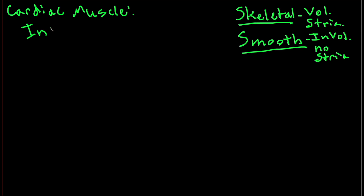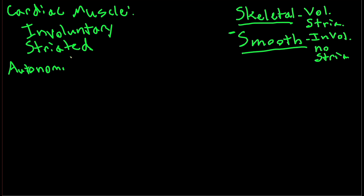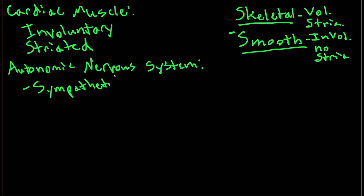Cardiac muscle is involuntary — you can't directly control your heart rate — but it is striated, so it's a good middle point and an interesting intermediate between skeletal and smooth muscle. It's also controlled by the autonomic nervous system, just like smooth muscle, meaning it's controlled by both the sympathetic and parasympathetic nervous systems.